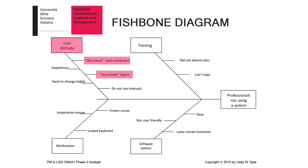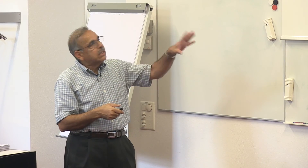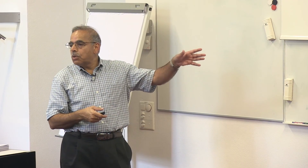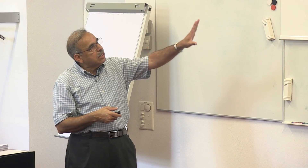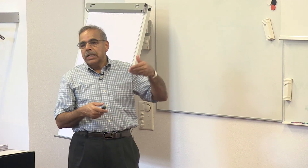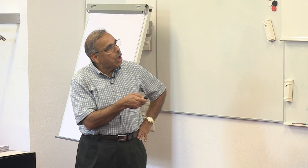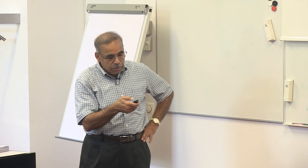Another thing that might be happening is that they are not used to using manuals — if something does not work, they just give up. Hard to change habits and impatience are also factors. You keep on filling up this fishbone diagram, and it becomes a very clear representation and communication tool for explaining why and how you plan to solve the problem.